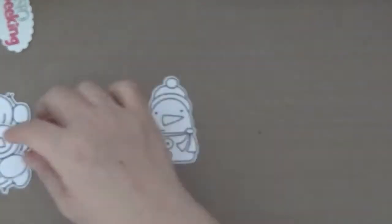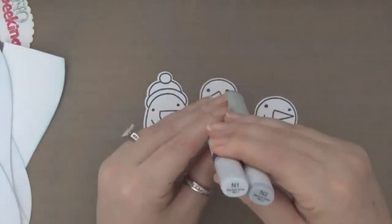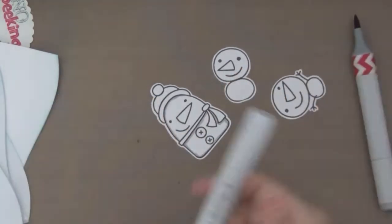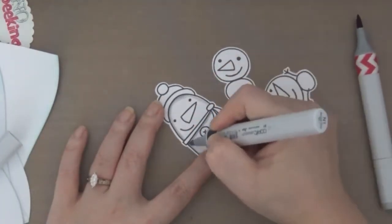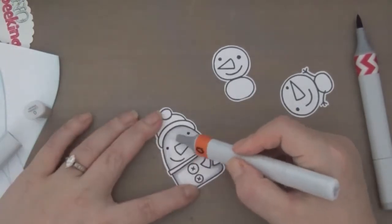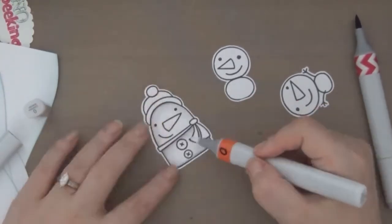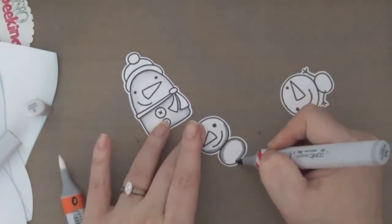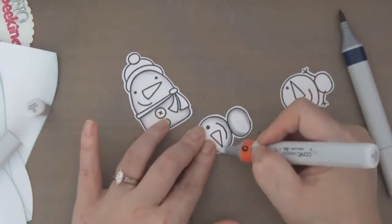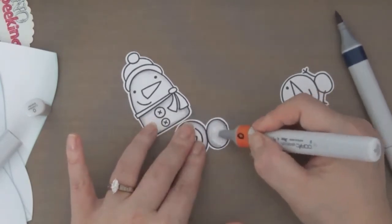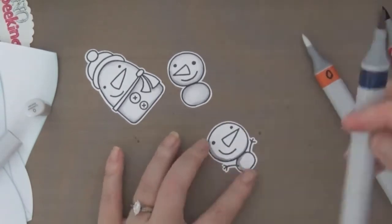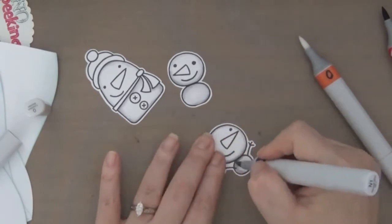And then now I'm going to be coloring the snowmans. I'm using W1 and W3 and the Colorless Blender. It's really simple coloring. So I went in and made the shadow by using W3, and then I pulled it out a little bit more with W1, and then I'm blending out the whole thing, softening it out with the Colorless Blender. Because I want the snowmans to appear white, so I just want to only add a little bit of color.